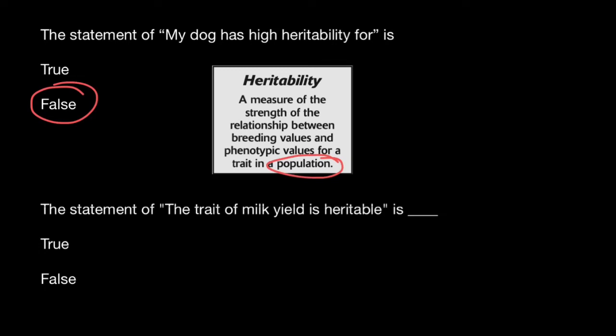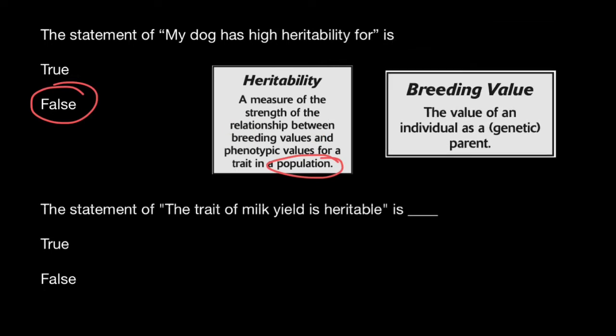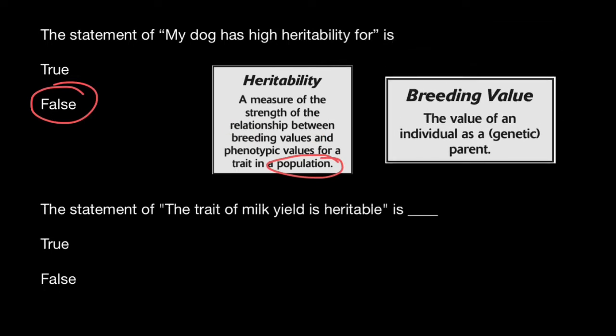Just to be clear, some of you may be confused about what phenotypic values or breeding values are. Here's another statement: breeding value is the value of an individual as a genetic parent. So heritability is a property of the population, and breeding value is a property of the individual.